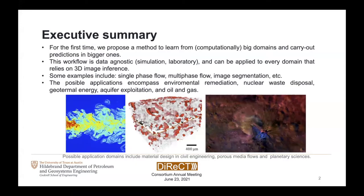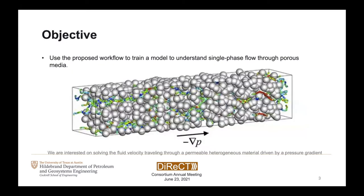As the summary says, for the first time we're proposing a way to train neural networks with big volumetric data. The model itself is not constrained to any specific application — it could be used for reservoir simulation, geophysical interpretation, or populating petrophysical properties in a structured grid, among others. In this presentation I will specifically talk about flow through porous materials, because it's the topic I like the most.